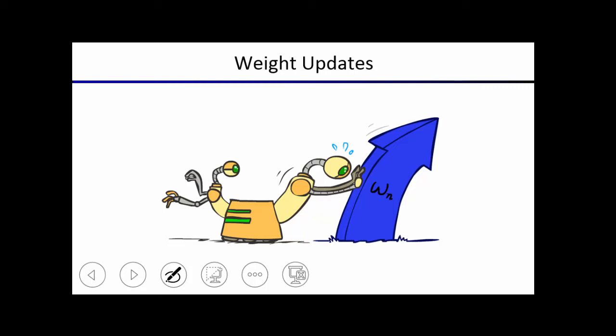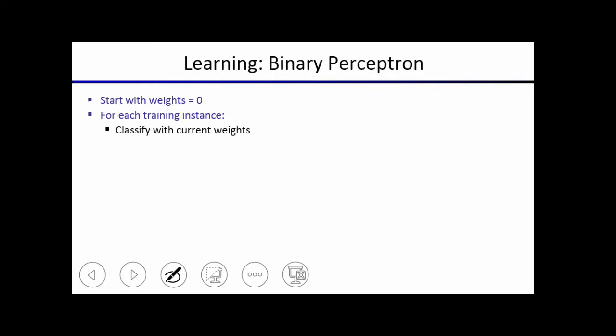So next let's talk about the weight updates and how we're going to learn the weights on this classifier. The way the algorithm works is you start with a weight vector of all zeros, and then you loop through all of your training examples.